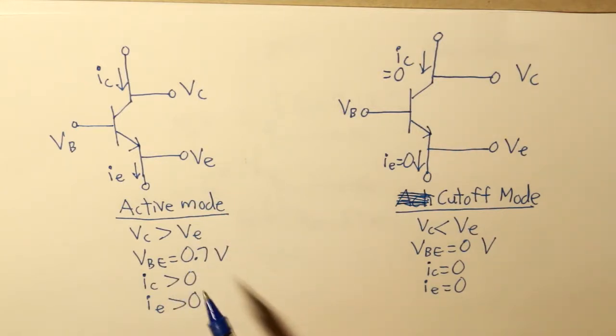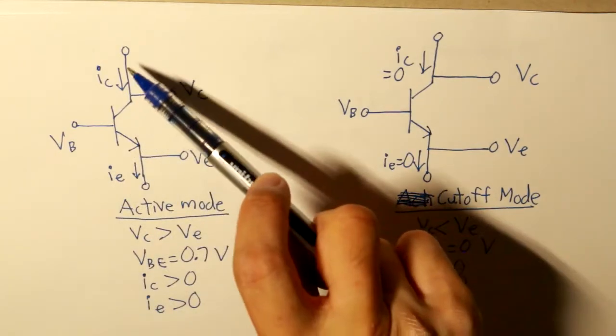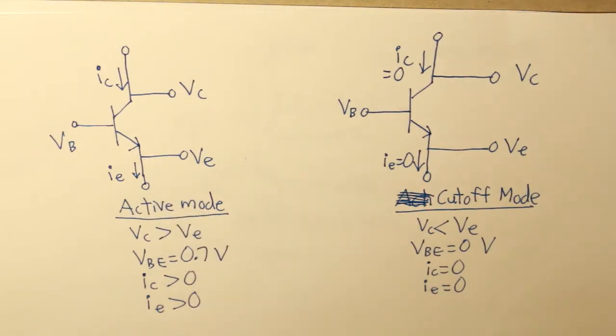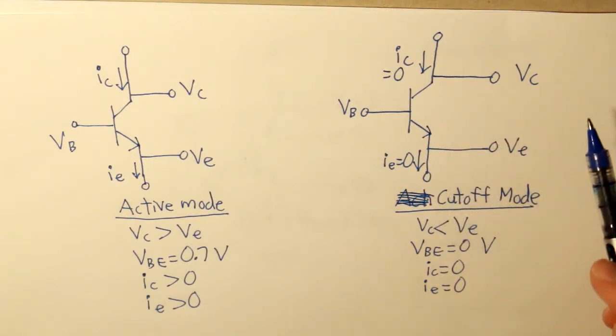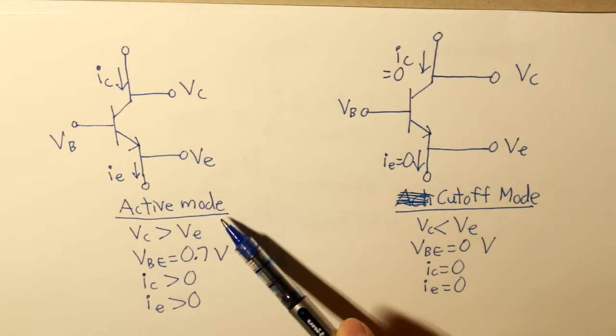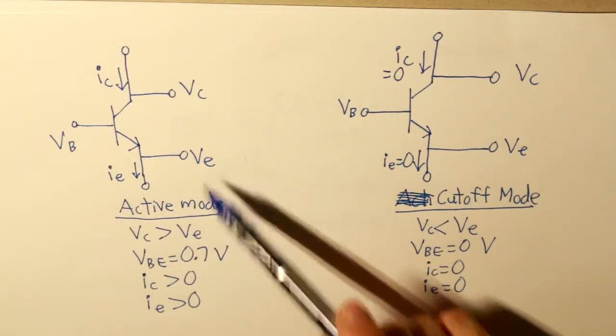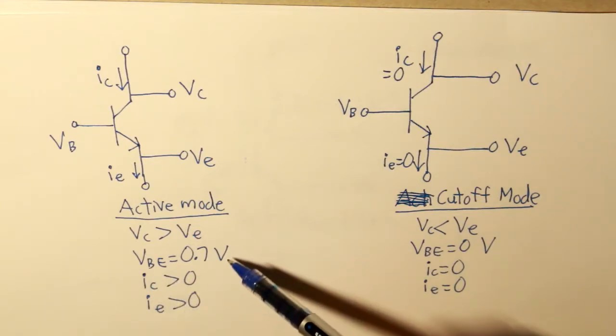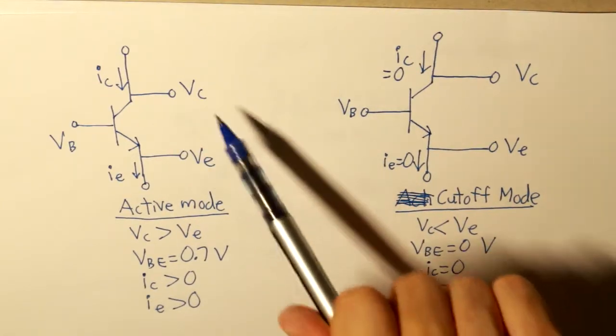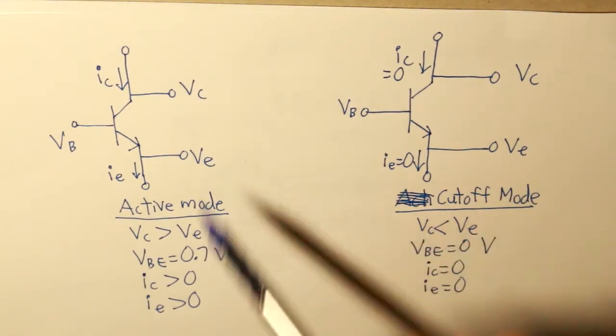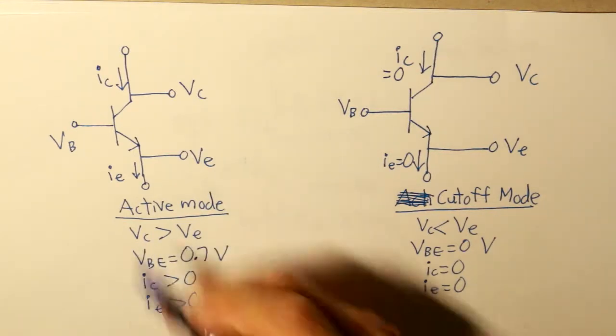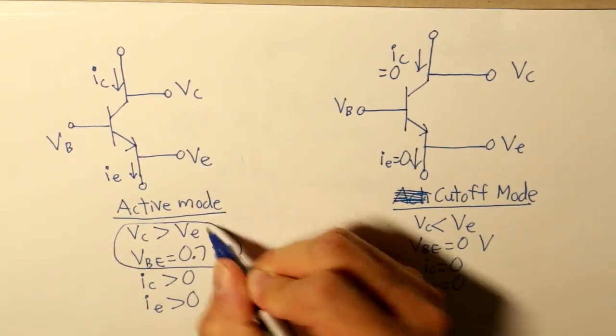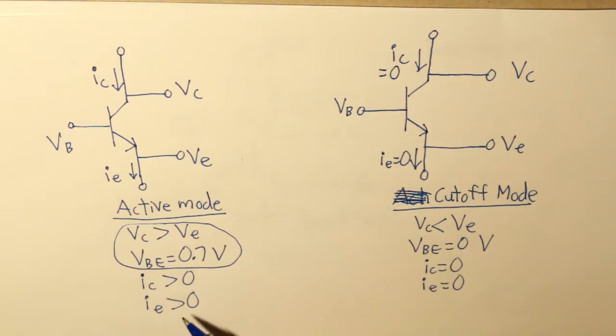Active mode basically means that the BJT is closed and the switch is on, so current is passing down from the collector to the emitter. The potential barrier VBE has to be 0.7 volts, and the voltage on the collector side has to be greater than the emitter side. Therefore, having these two conditions being met, our collector current and our emitter current will be greater than zero.